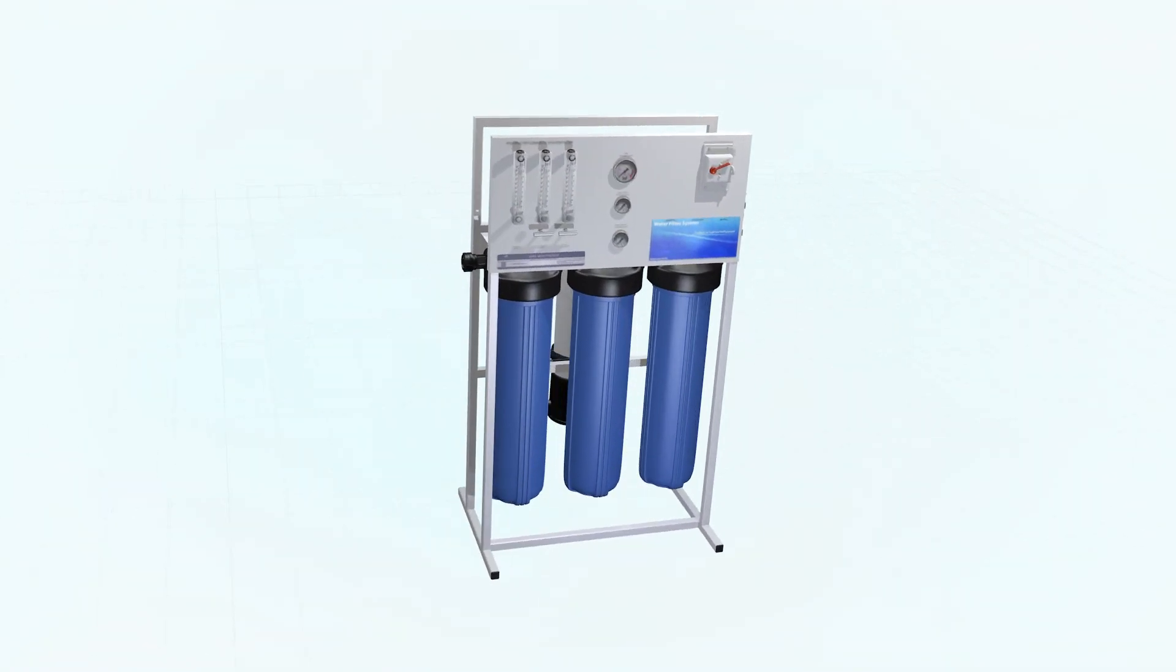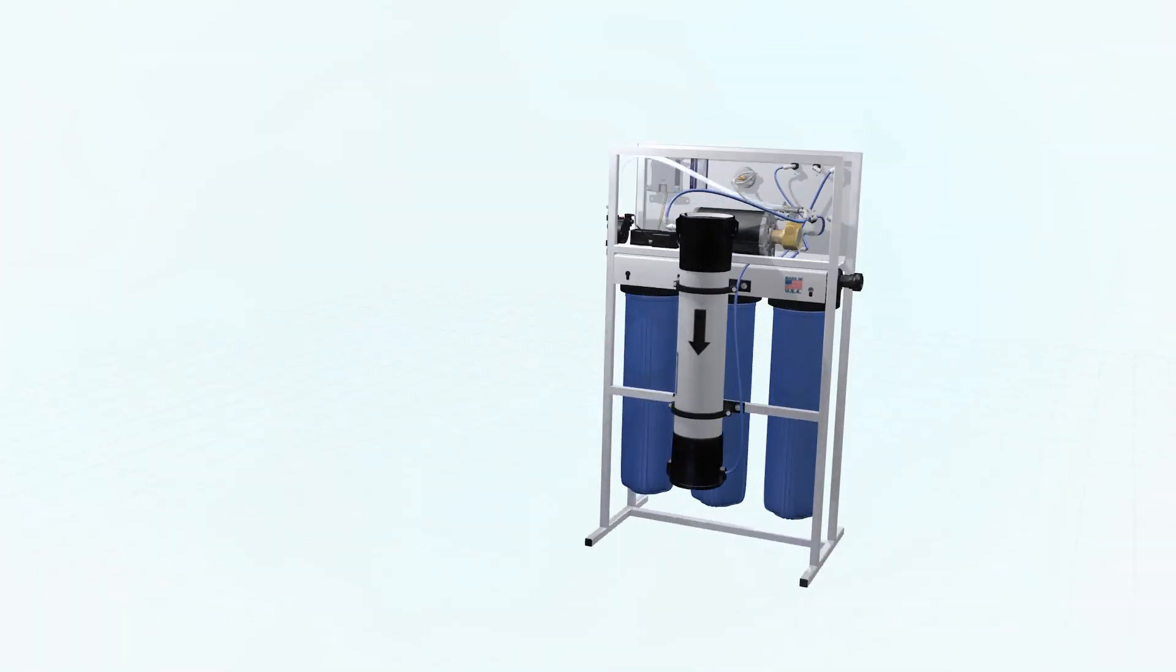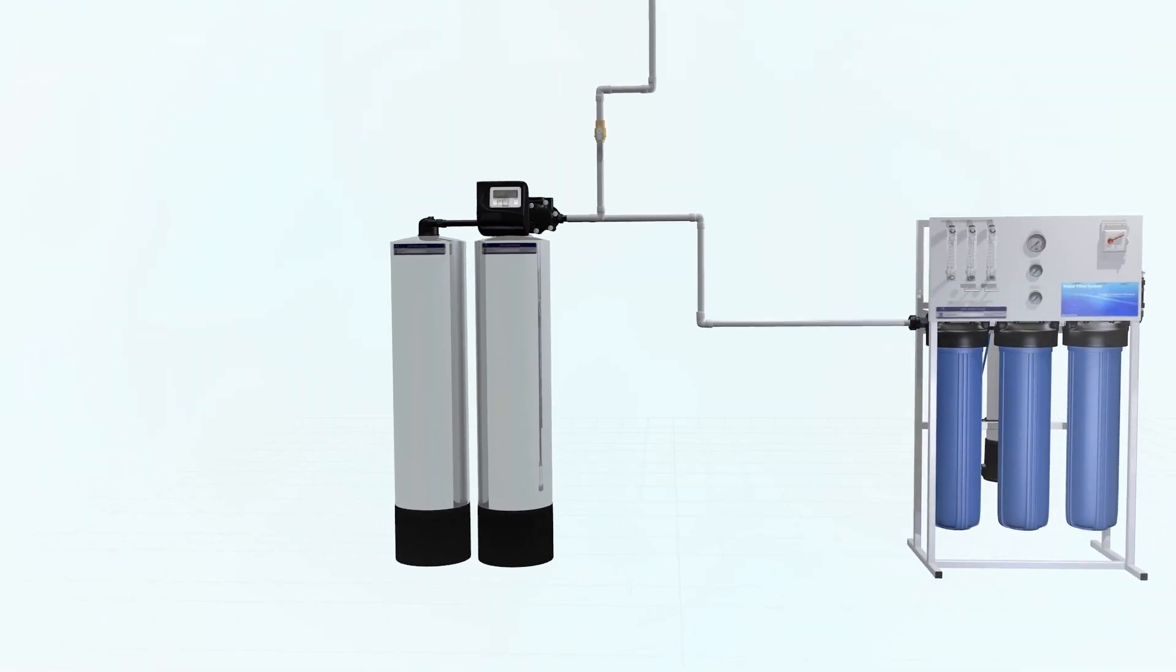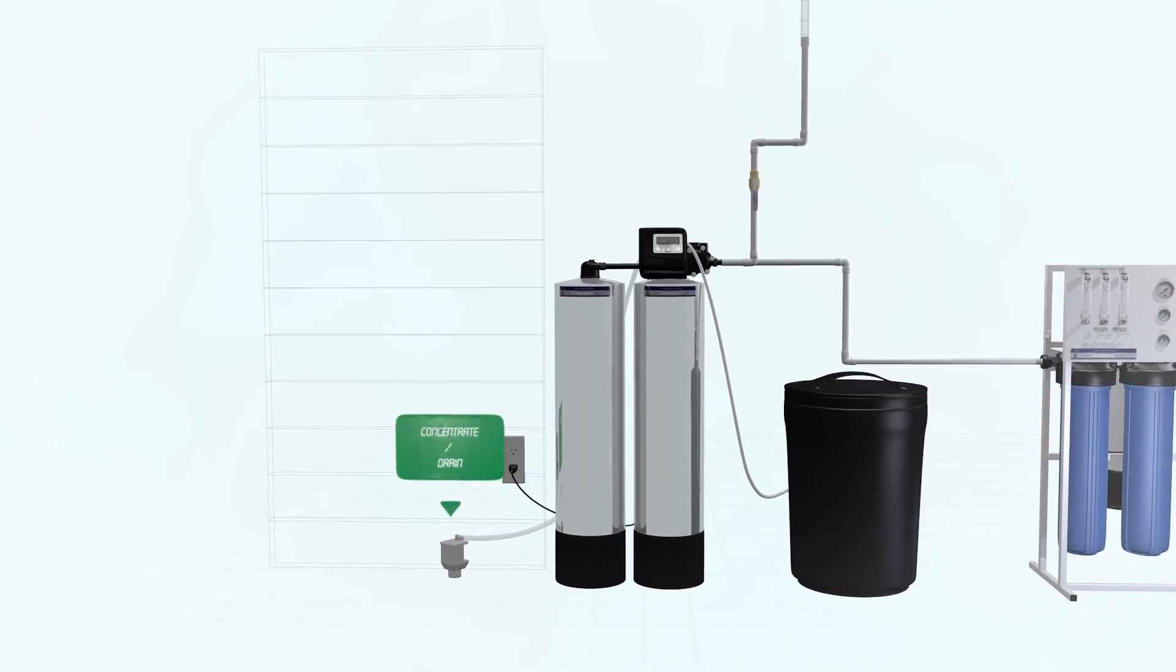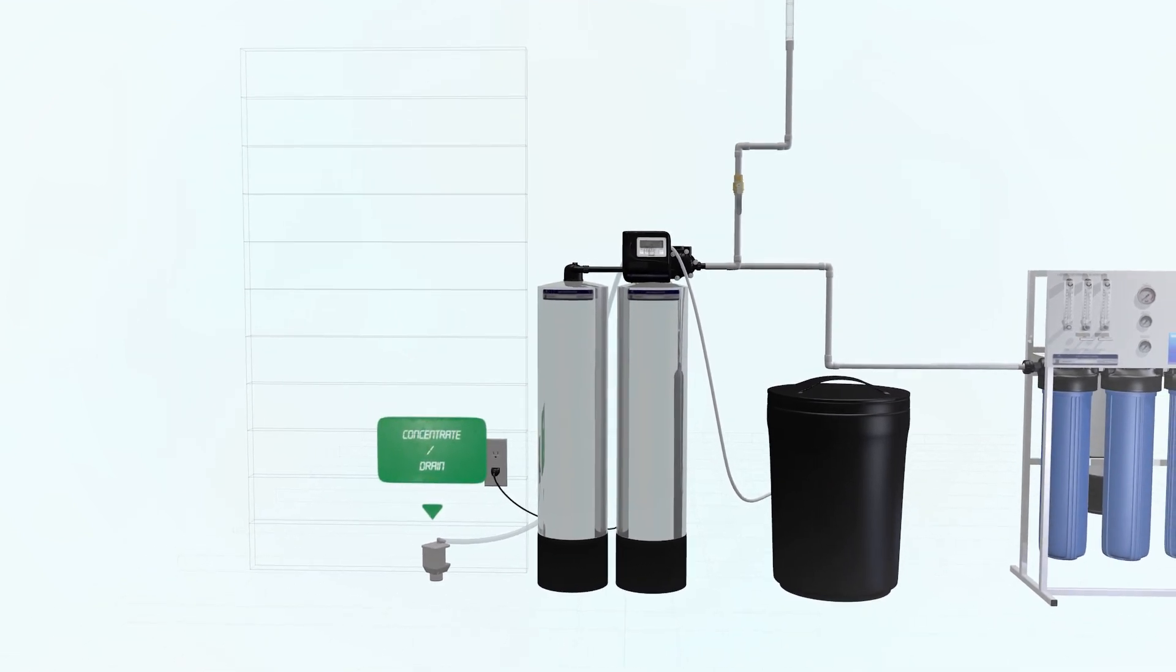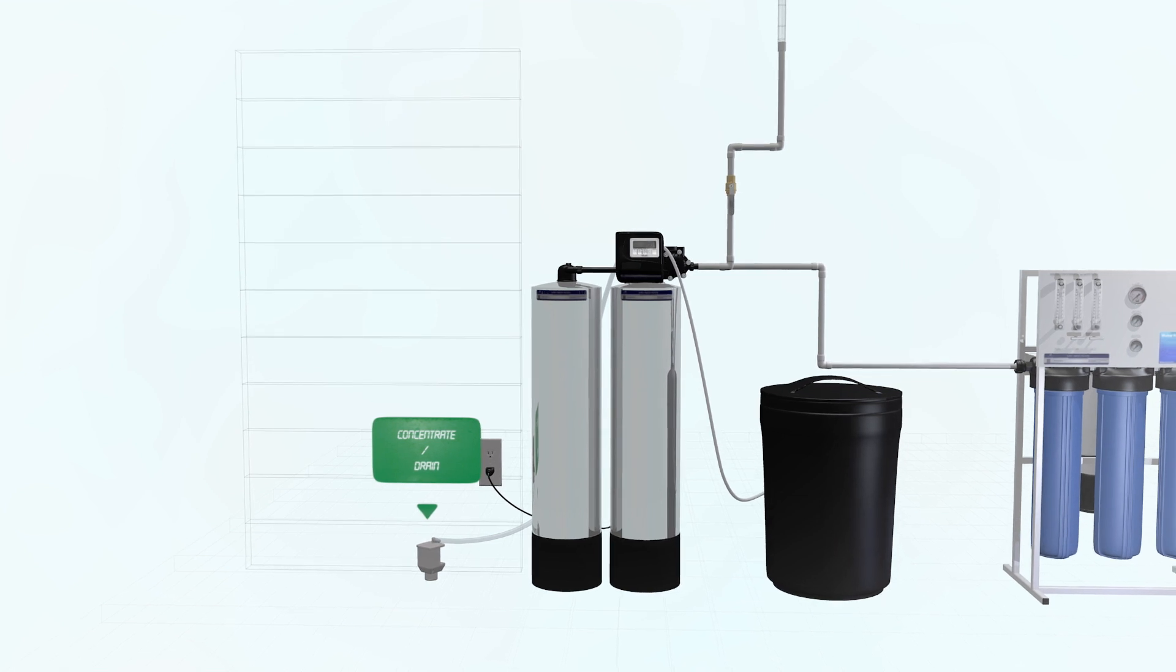APEX strongly recommends using a twin alternating water softener to soften the feed water and remove iron to protect the RO membrane. Hard water and iron can precipitate and damage the reverse osmosis membrane.